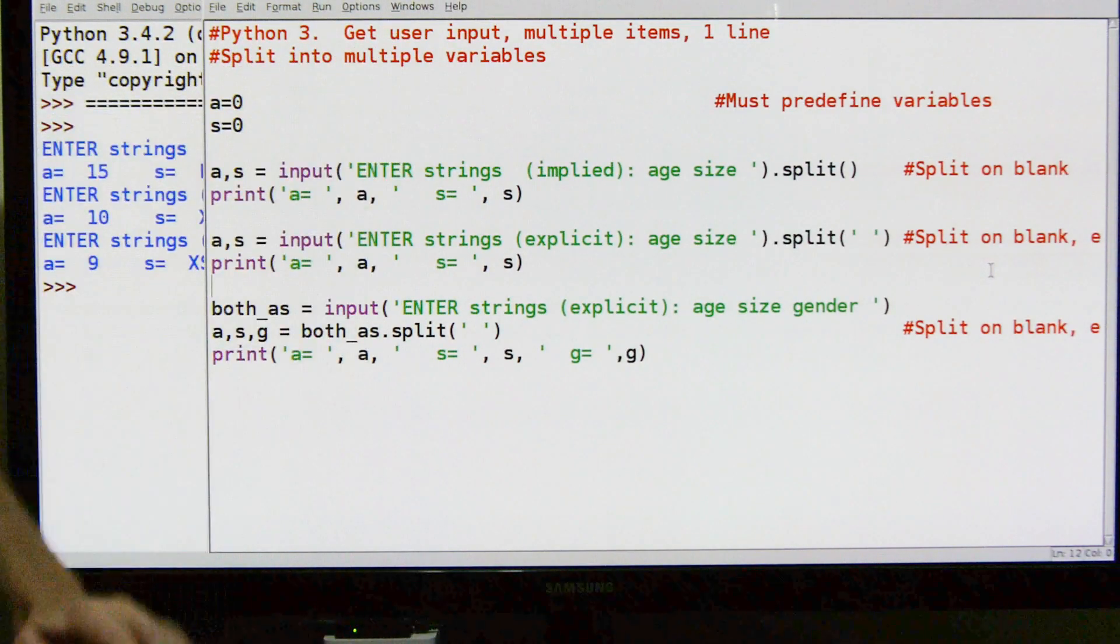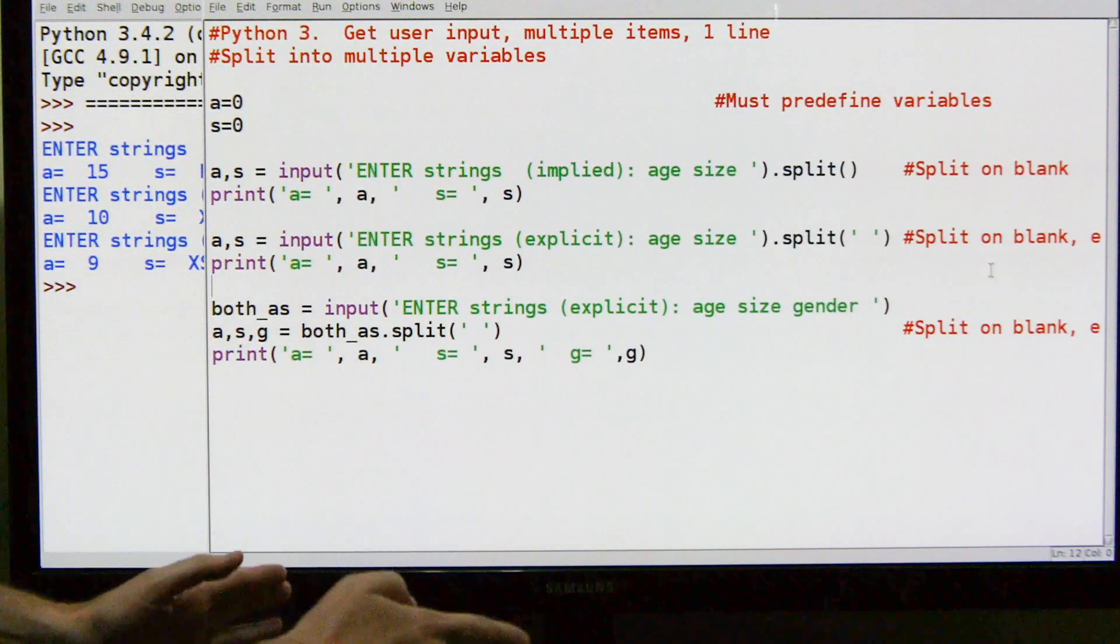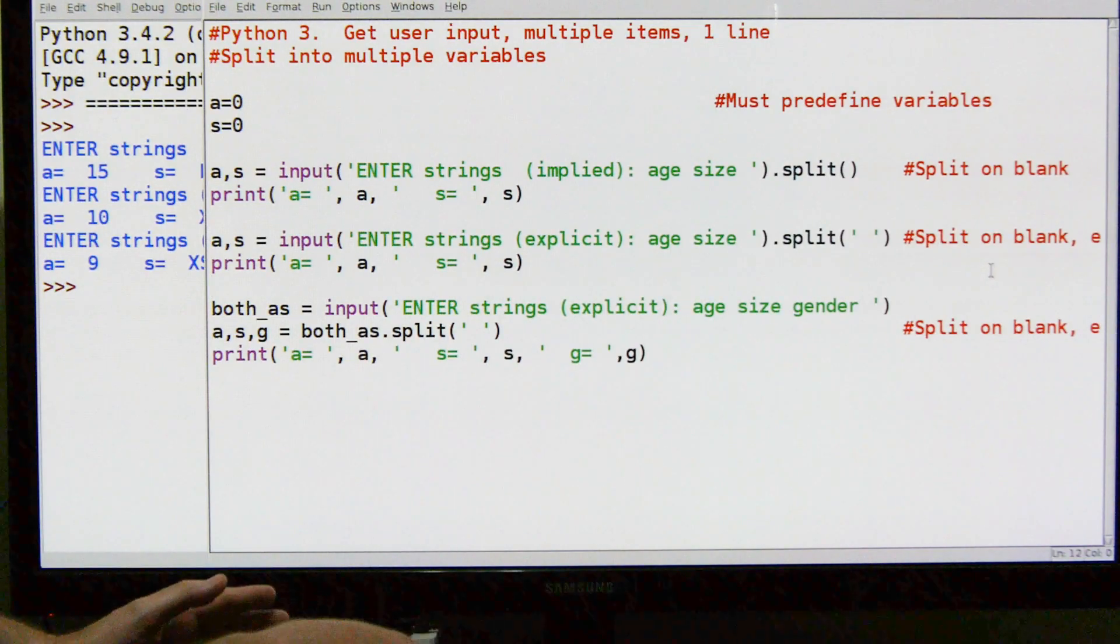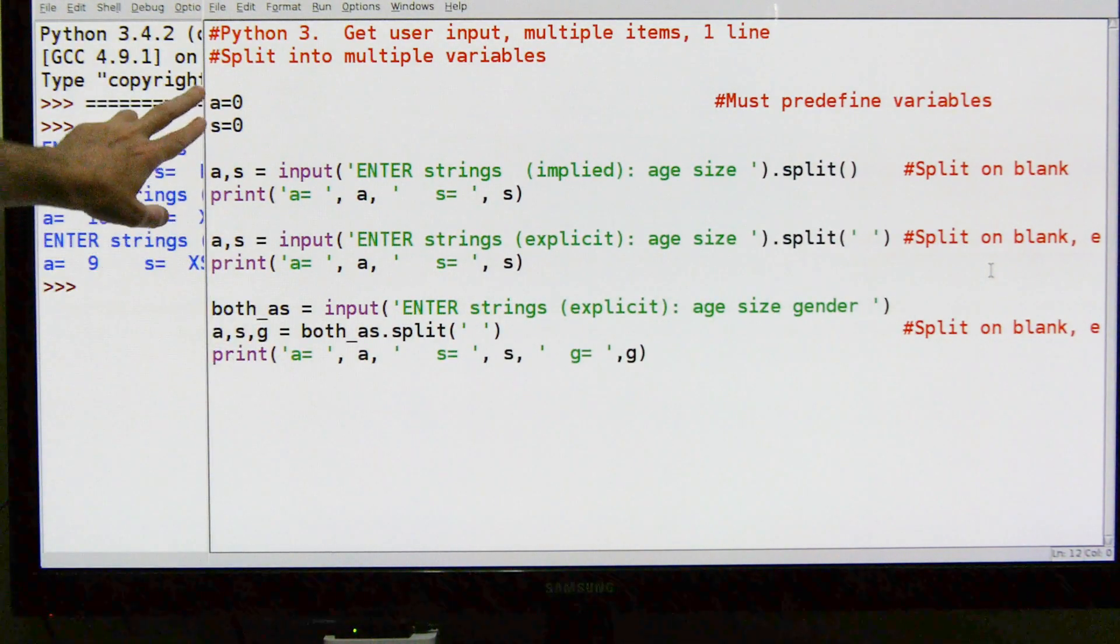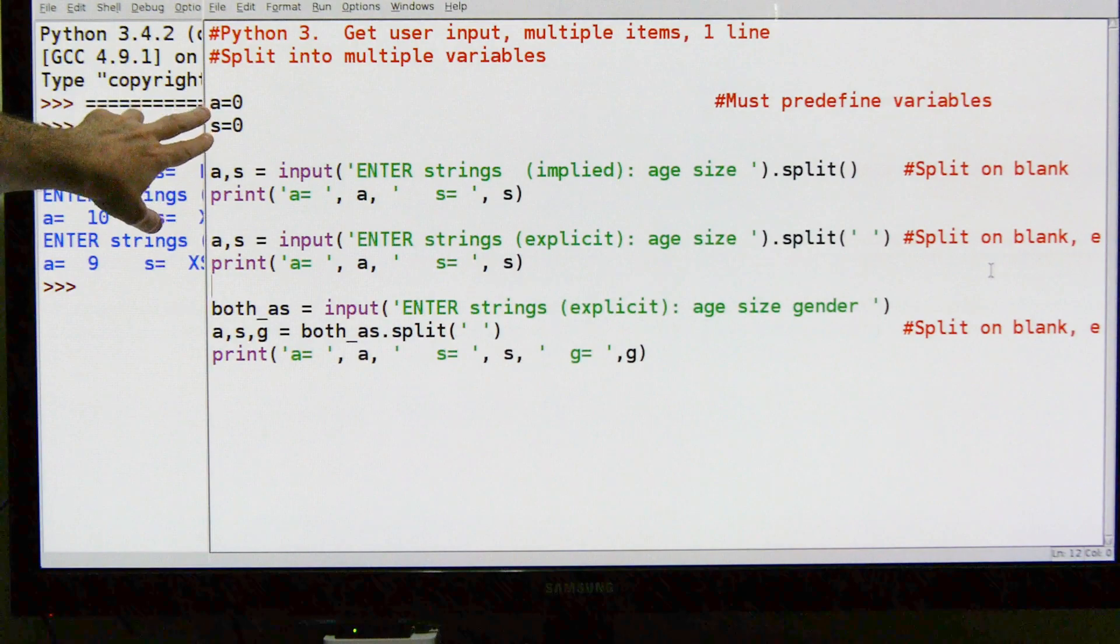What we're going to do is get some user input, get multiple items on one line of input, and split those apart. First we're going to define our input variables, maybe age and size for example.